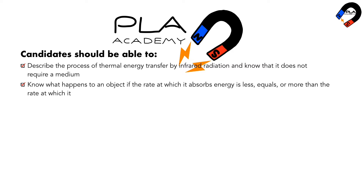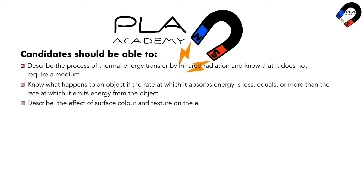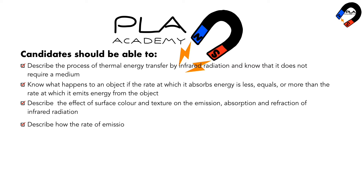or more than the rate at which it emits energy from the object. Describe the effect of surface color and texture on the emission, absorption, and reflection of infrared radiation. Describe how the rate of emission of radiation depends on the surface temperature and surface area of an object.